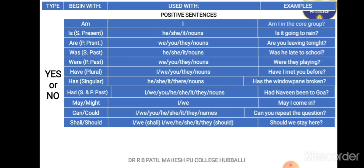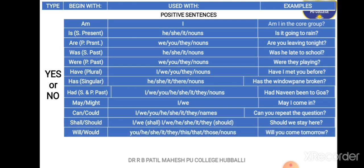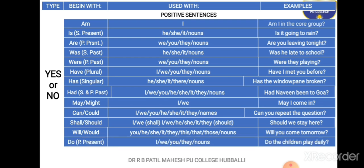Next is 'shall' and 'should'. 'Shall' goes with I and we. 'Should' goes with I, we, he, she, it, and they. Example: 'Should we stay here?' Next is 'will' and 'would'. These go with you, he, she, it, they, this, that, those, and nouns. Examples: 'Will you come tomorrow?', 'Will this be given to him?', 'Will that be considered?'